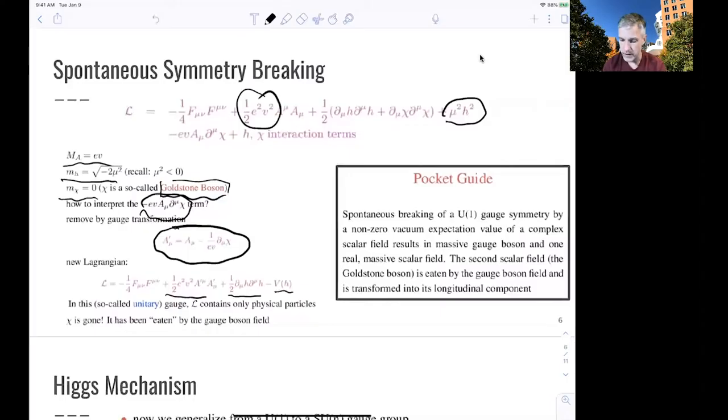So the pocket guide here for spontaneous symmetry breaking is such that spontaneous symmetry breaking of a U(1) gauge symmetry by a non-zero vacuum expectation value of a complex scalar field results in a massive gauge boson and one real massive scalar field. So we created mass. But as a side product, we also have an additional field. And that field itself has a mass term, so it's massive. So the second scalar field we had just disappeared. The Goldstone boson has been eaten by the longitudinal component of the gauge field itself.